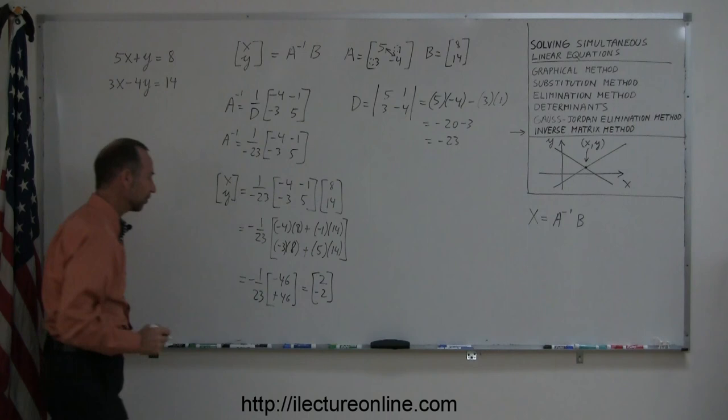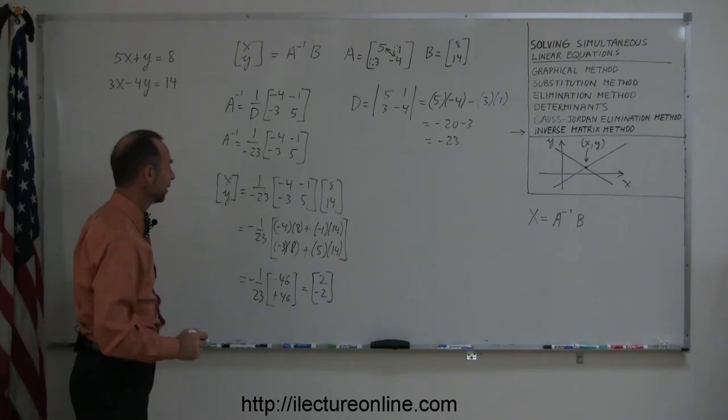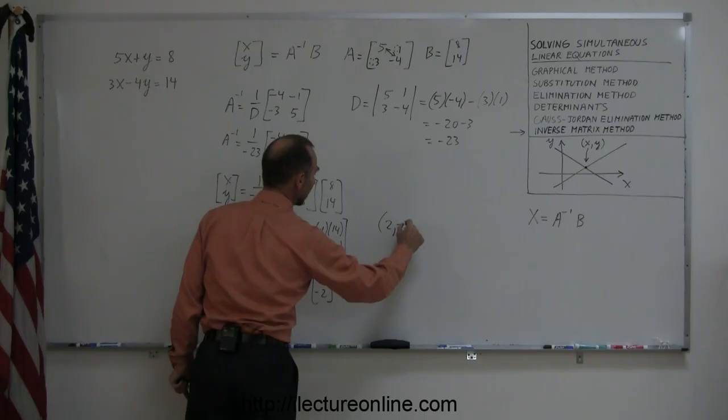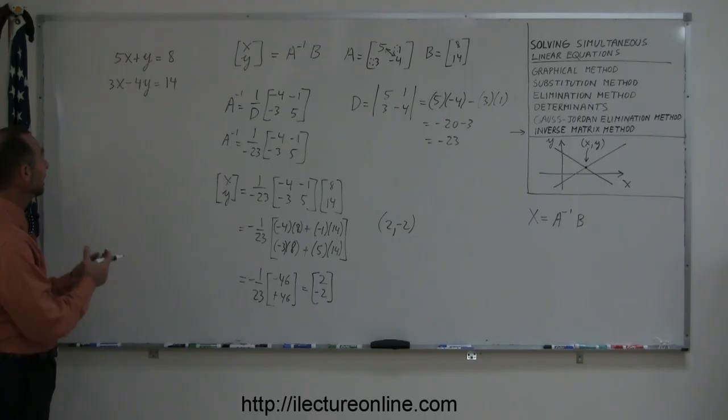So here you can see that the solution to these two equations can be found, the x and the y value, by going through this methodology, and we can then say that the solution is 2 and negative 2. You say, well, why do I go through all this trouble? Again, there's easier ways to do this kind of problem by not using the inverse matrix method, but there's other reasons why this can be a very handy method to use.